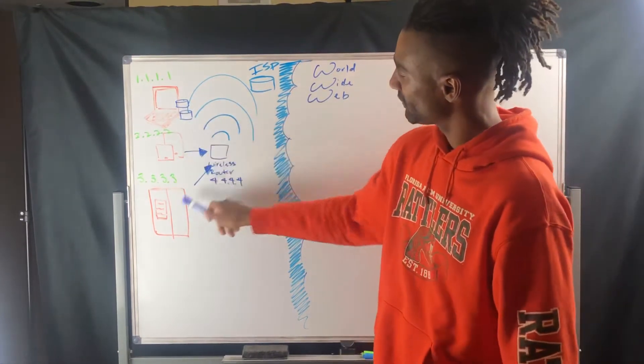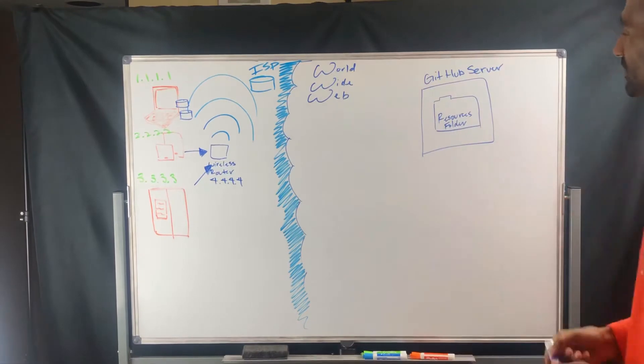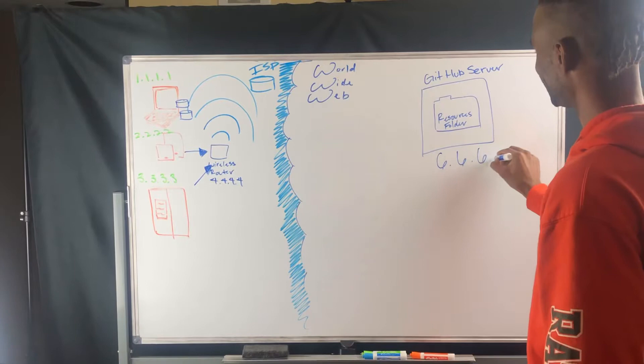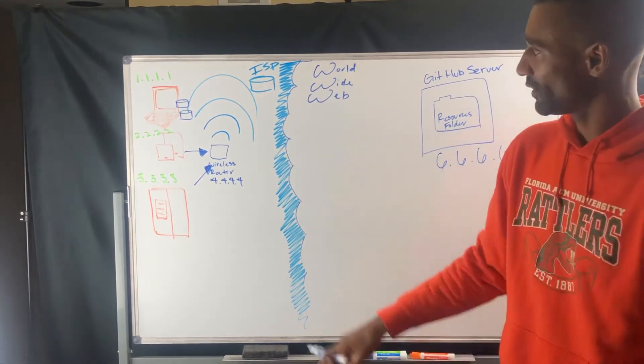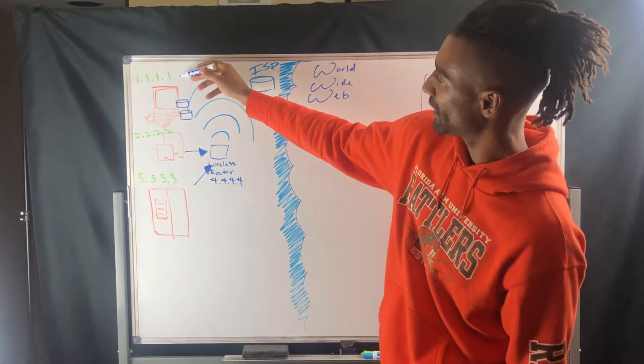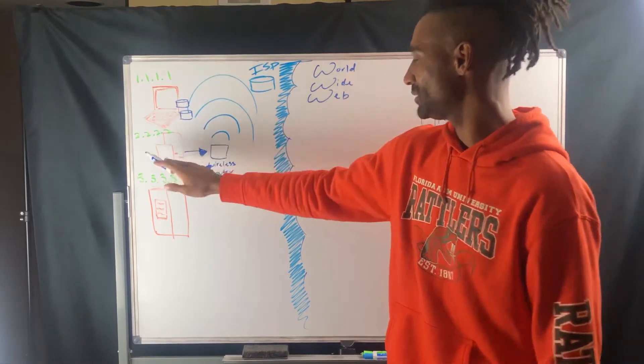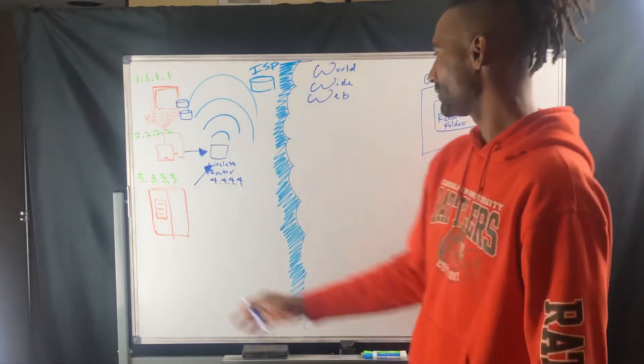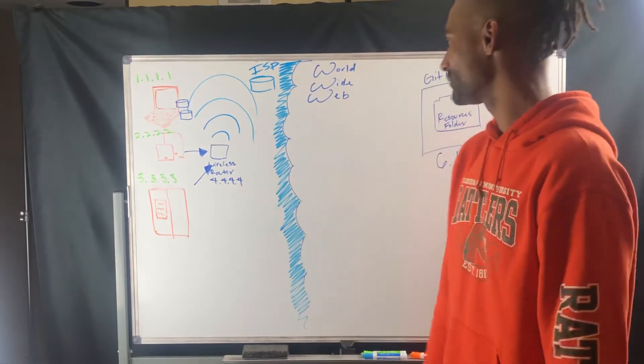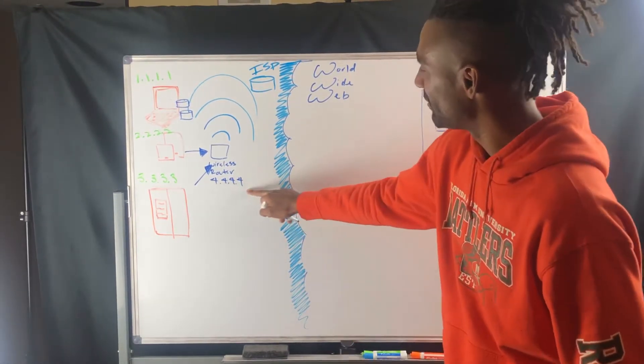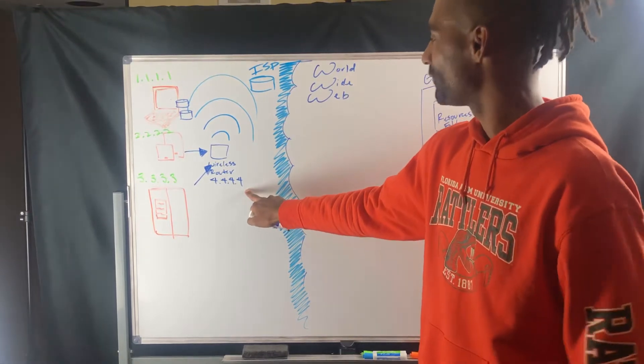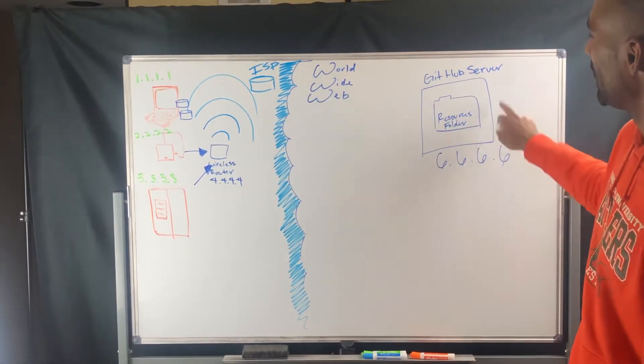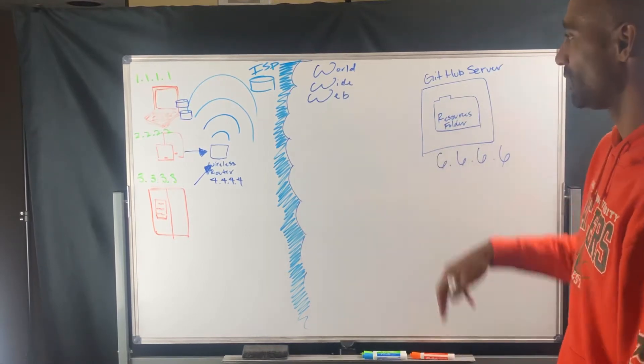So if you look at all these different machines, this is also a machine right here, and it has an IP address as well. IP address is 1.1.1.1 for this laptop, 2.2.2.2 for the phone, and the threes for the computerized refrigerator, and then we have an IP address at 4.4.4.4 for our wireless router, and 6.6.6.6 for our GitHub server on the World Wide Web.